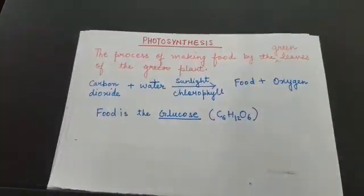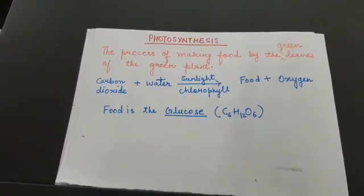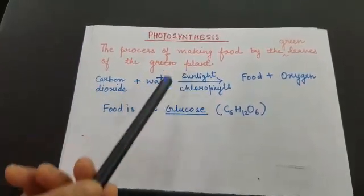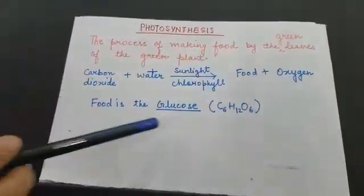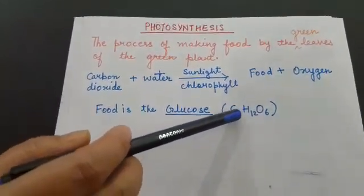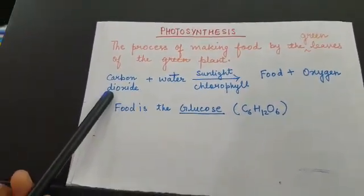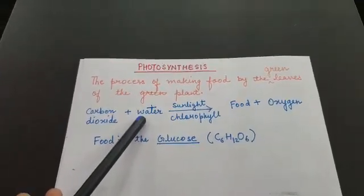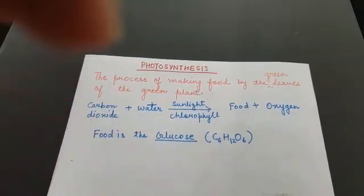Let us know about photosynthesis in detail. The process of making food by the green leaves of the plant is called photosynthesis. Green leaves use carbon dioxide, water, sunlight and chlorophyll to make food and release oxygen. This food is glucose, and its formula is C6H12O6. Leaves take carbon dioxide through stomata from the air, take water from the soil through the root, and sunlight from the sun, while chlorophyll is already present in the leaf.